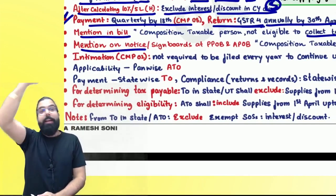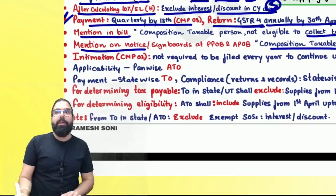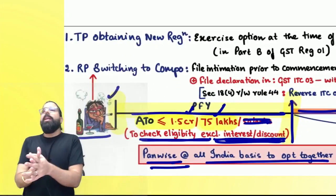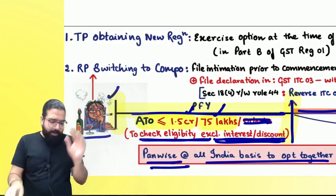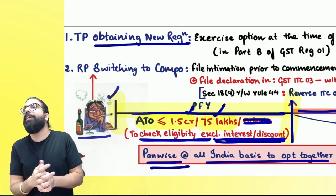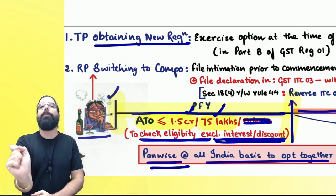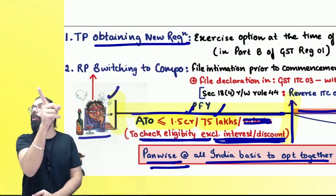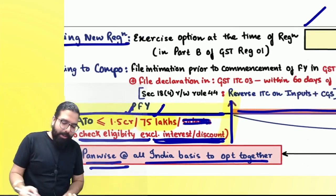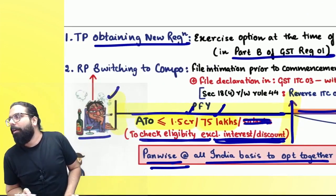Write in your bill: 'I am a Composition Taxable Person, not eligible to collect tax.' Also on your notice board display that you are a Composition Taxable Person. For new registration: when you take new registration, you fill Form GST REG-01 — in Part B there is an option to tick saying 'I want Composition Scheme' and your registration will come as Composition Scheme.